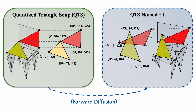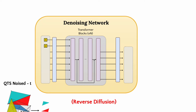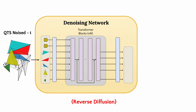We train a discrete diffusion model on quantized triangle soup data. In the diffusion forward phase, the quantized triangle soup is perturbed with categorical noise across a finite series of time steps. In the reverse diffusion phase, a transformer network is trained to recover the original unperturbed triangle soup from its noised counterparts.